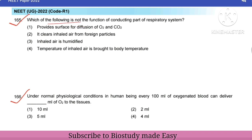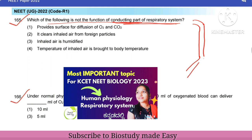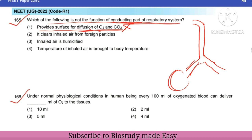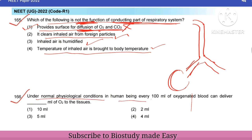Next question: which of the following is not a function of the conducting part of the respiratory system? The conducting part includes nostrils through trachea, bronchi — that is the conducting system. Option: 'provide surface for diffusion of oxygen and carbon dioxide' — diffusion does not occur in conducting part, it occurs in alveoli, so this is not its function. Other correct functions: clearing inhaled air of foreign particles, humidifying inhaled air, and bringing inhaled air to body temperature. So option one is the correct answer.